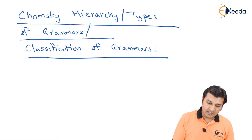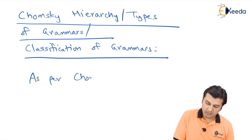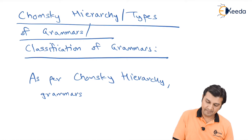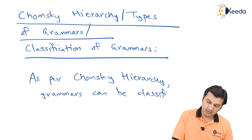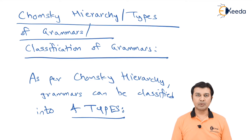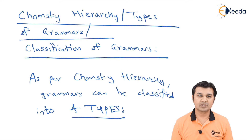As per Chomsky Hierarchy, grammars are classified into a total of four types. This will be a five mark short note. Let's discuss the four types in detail.